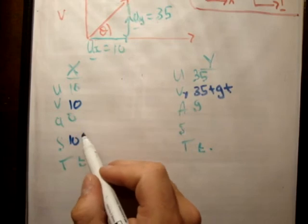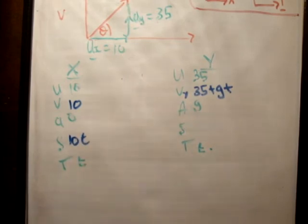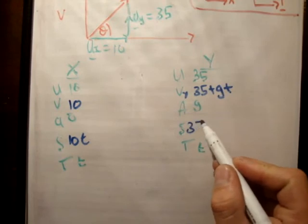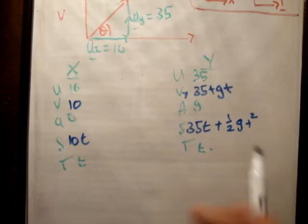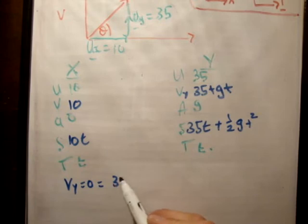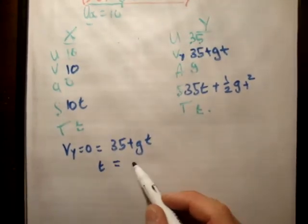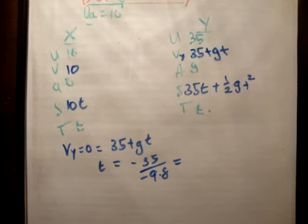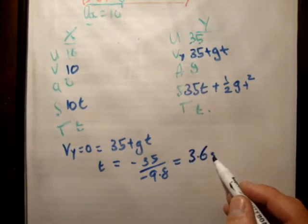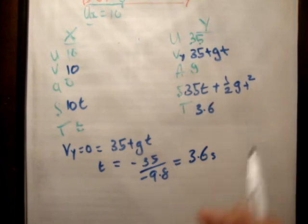This here is 10, of course, and this here is 10t, for the same reason as question 1, 2, and 3. And this is ut plus 1 half at squared, so it's 35t plus 1 half gt squared. So let's use our condition that v-sub-y is equal to 0 is equal to 35 plus gt. Therefore, t is equal to minus 35 over minus 9.8 is equal to 3.56. So it'll say 3.6 seconds.